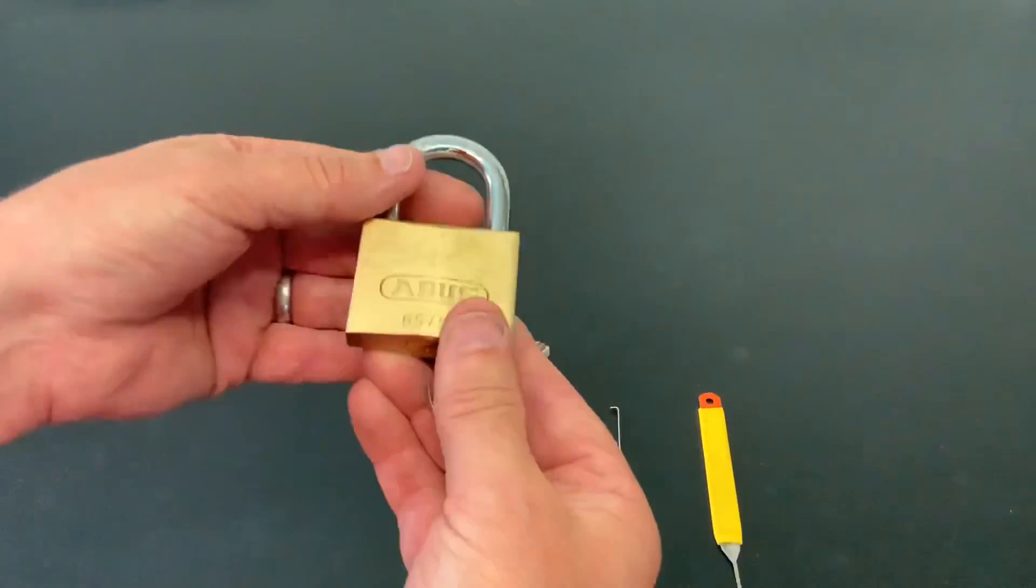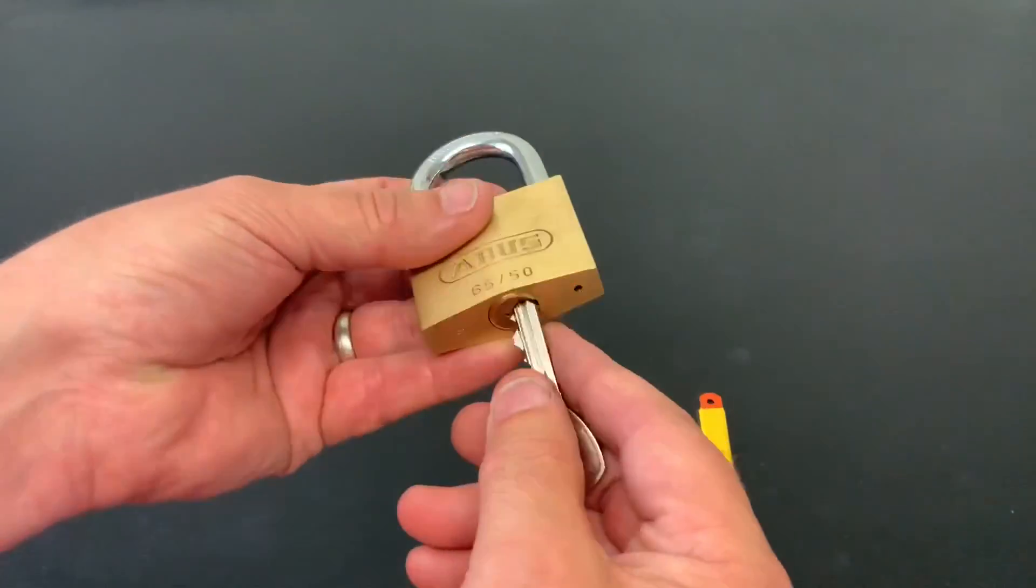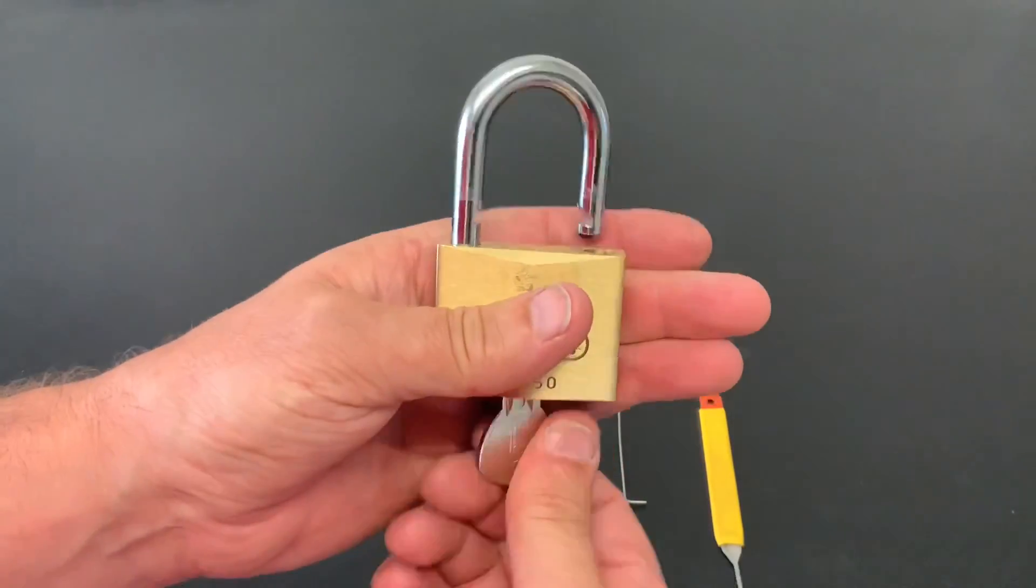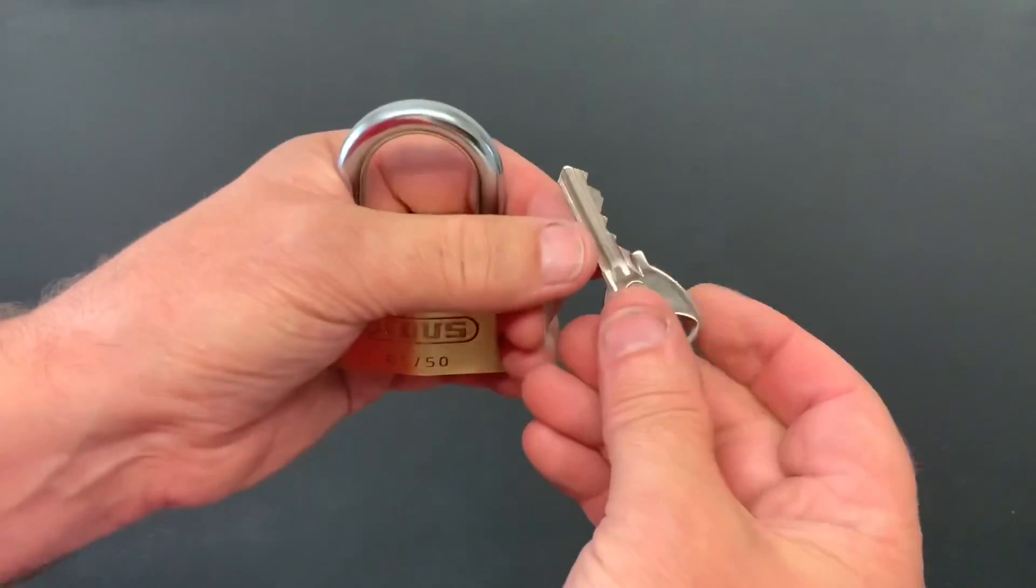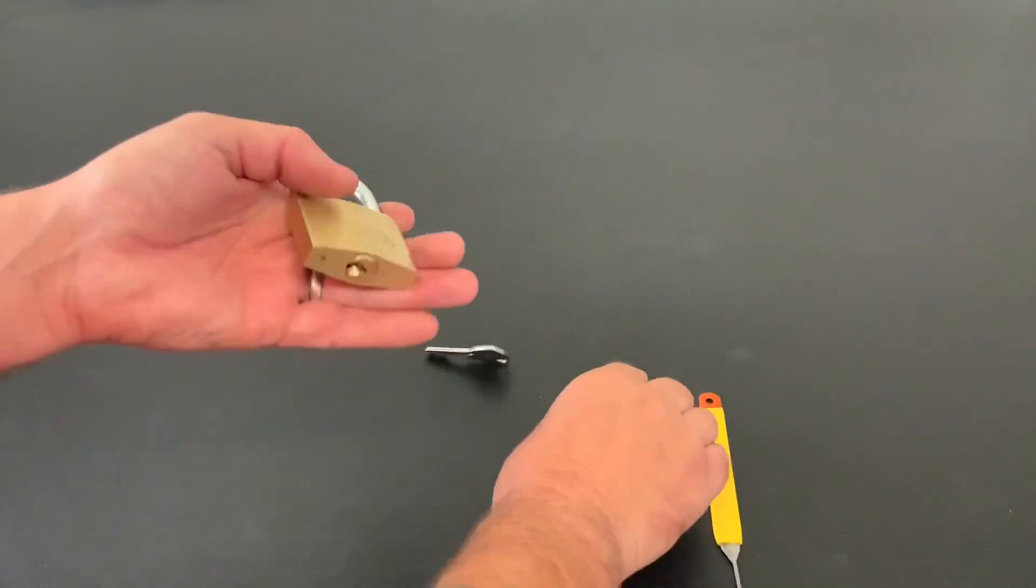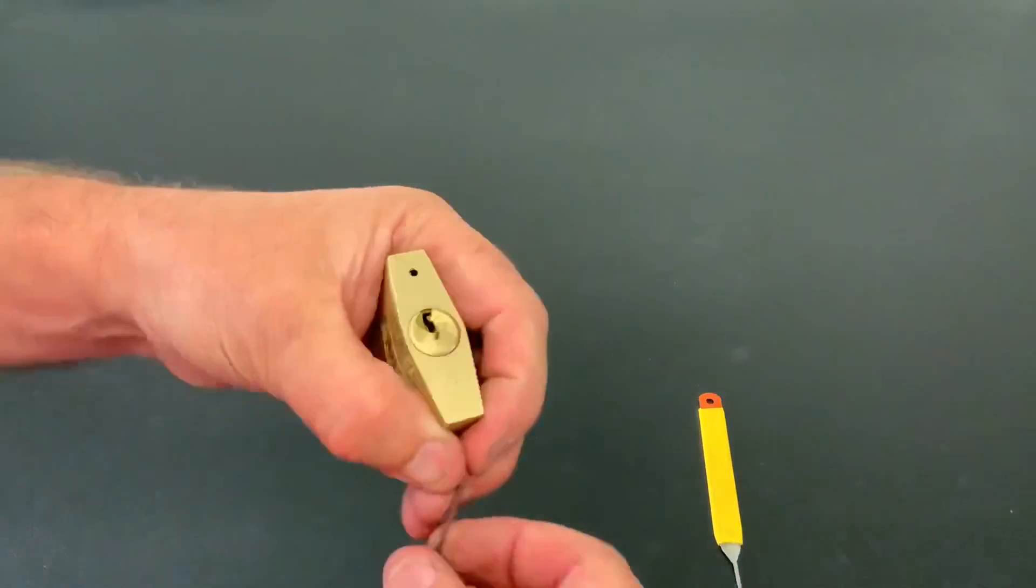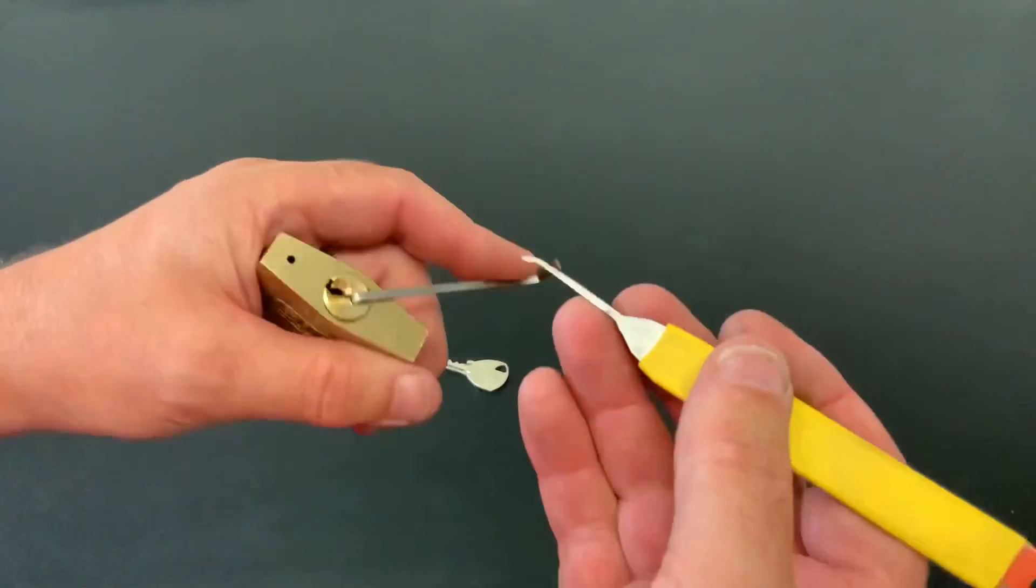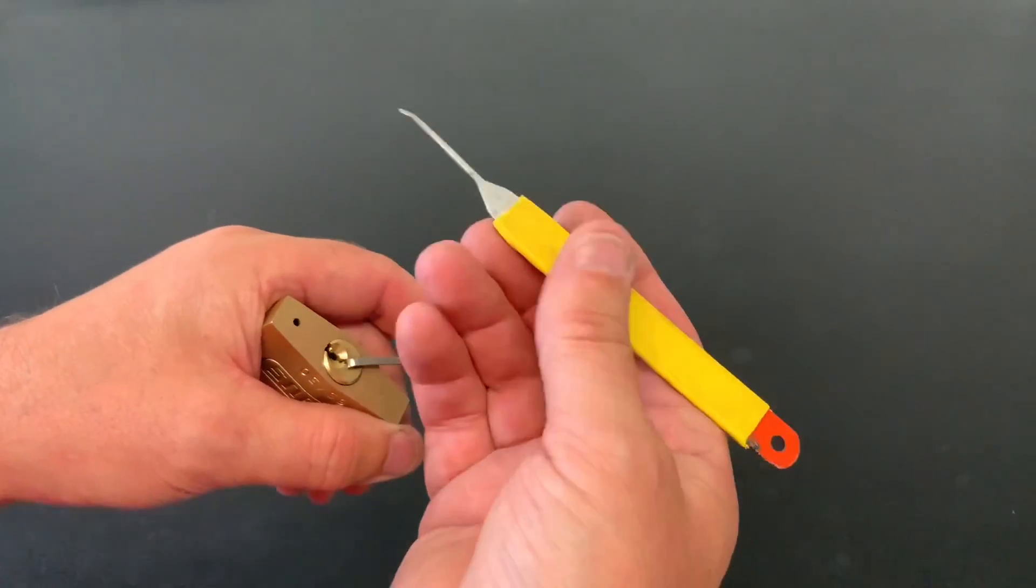We're going to put it to the test today on this Abus 6550. It's a decent lock, you know what these are like—quality locks, got plenty of spools in them. It's a five pin lock and that's the bitting on the key. Let's see if this little—I'll call it the Frankenstein pick because it is an ugly looking thing—let's see if it can get into this Abus.